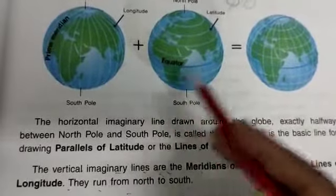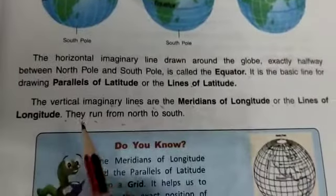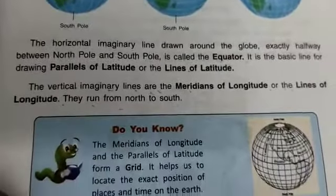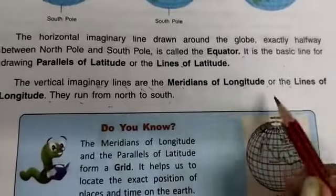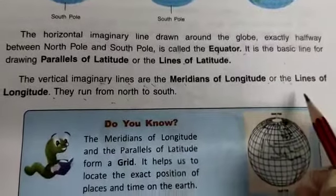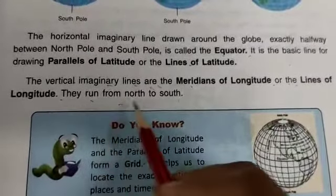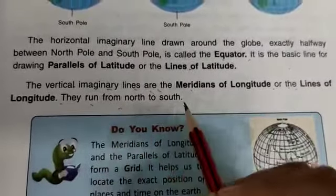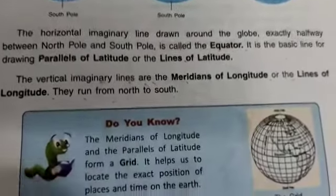The vertical imaginary lines are called meridians of longitude, also known as lines of longitude. They run from the North Pole to the South Pole. These are the imaginary lines of longitude, and together with lines of latitude they form the coordinate system.